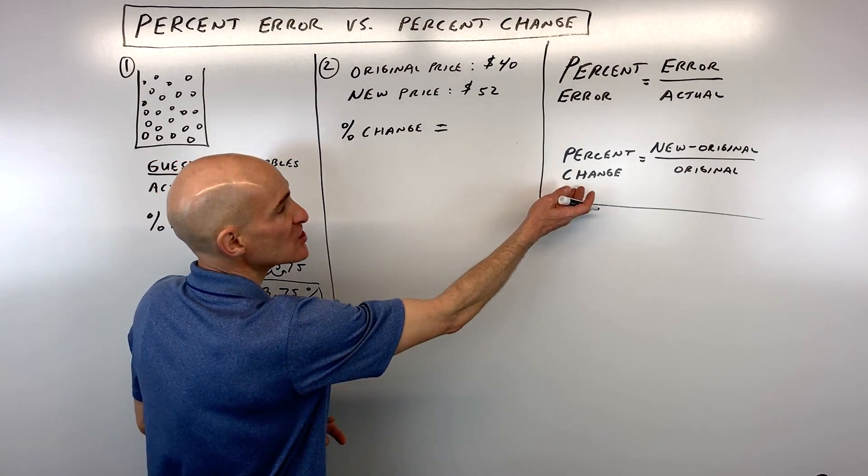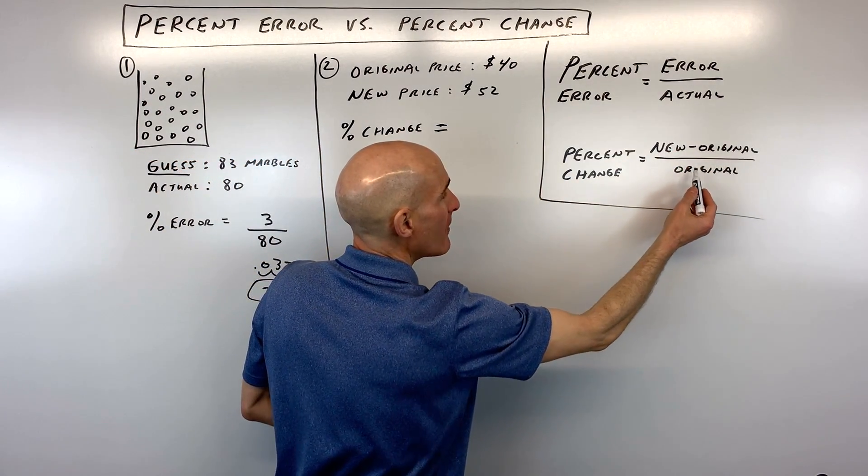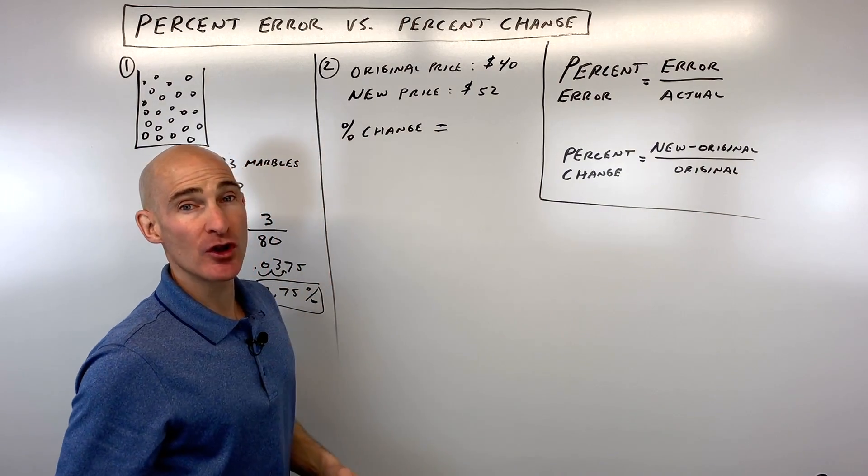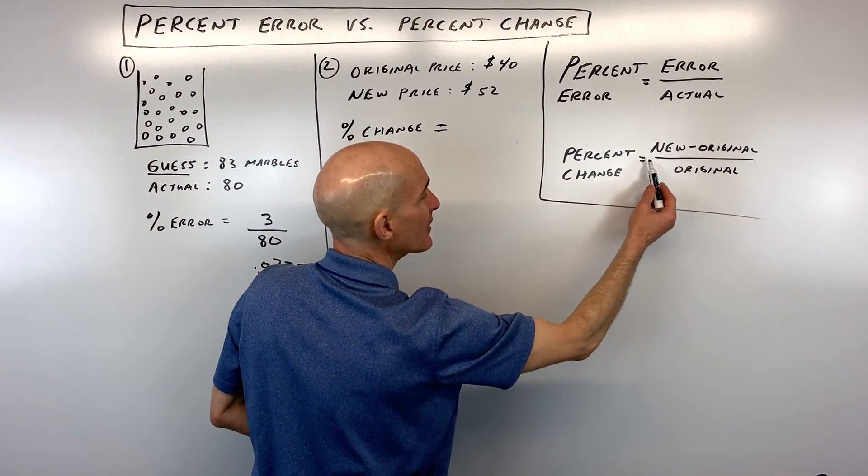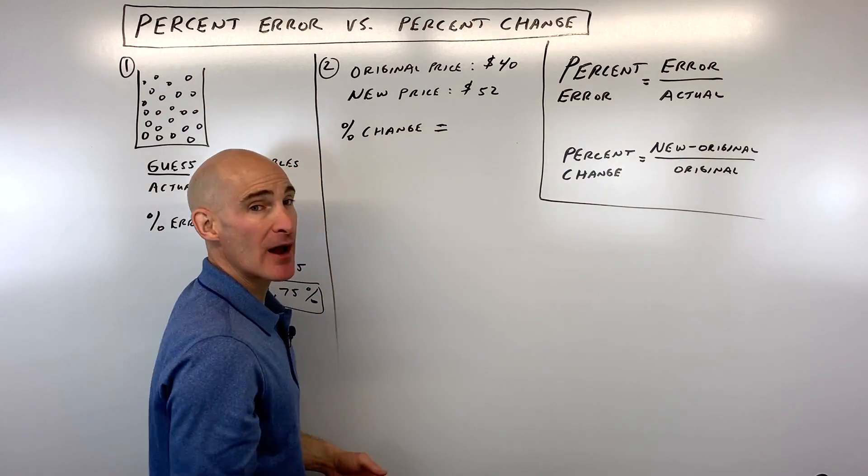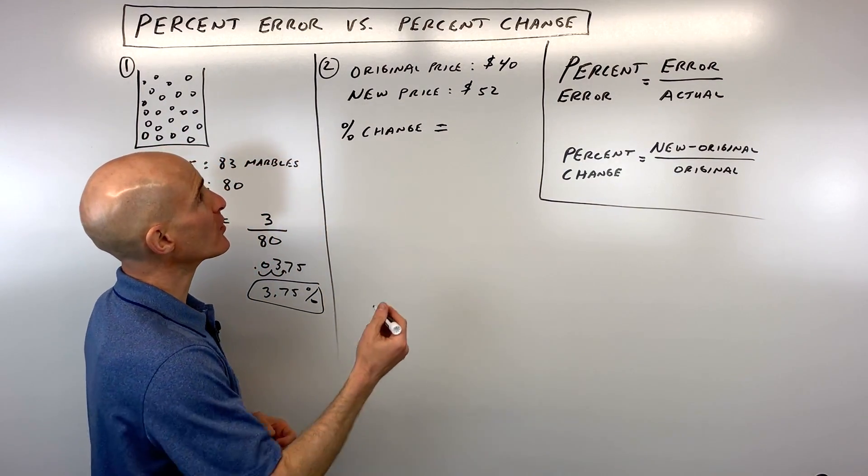Well, when you do percent change, you want the new amount minus the original amount divided by the original amount. So what you're doing is you're figuring out how much it's changing by, new minus the original, divided by what it was to begin with. Not the new price, but the original price.